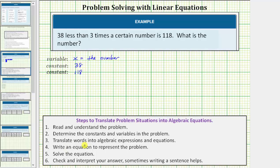Next step, we translate the words into algebraic expressions and equations. So again, thirty-eight less than three times a certain number is 118. Well, three times a certain number would be three times x, or 3x. And we want thirty-eight less than 3x, and therefore we subtract thirty-eight from 3x. So that gives us the expression 3x minus 38.